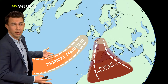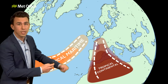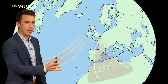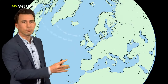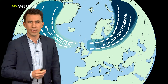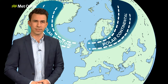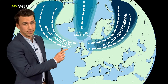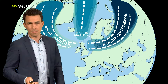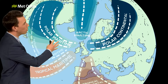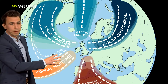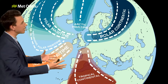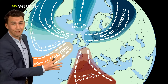Warm air masses originate from the southwest, the subtropics or the tropics. These are called tropical. Cold air masses come from Canada, Greenland, Siberia, Eastern Europe. These are polar air masses. And when it arrives straight from the north, this is called an Arctic maritime air mass. And on returning polar maritime, we have something of a polar-tropical blend. Six air masses in total affect the UK.